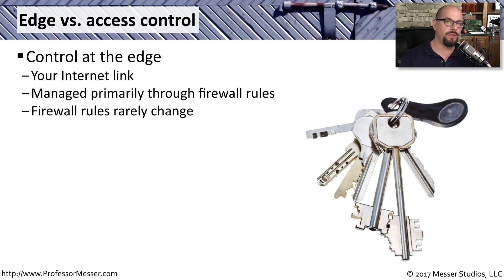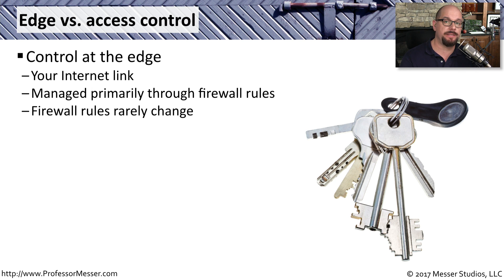Many organizations will put security controls at the edge of the network. This is the part where your network is connecting to the internet. Usually this is a firewall, and you're configuring firewall rules to allow or prevent certain kinds of traffic. These firewall rules are initially implemented, and then it's a formal process to make any changes to this centralized firewall.